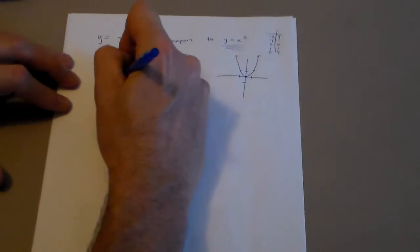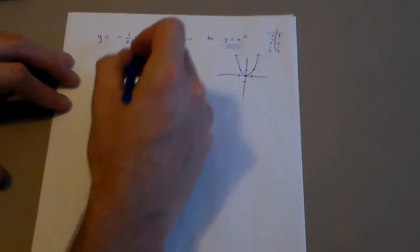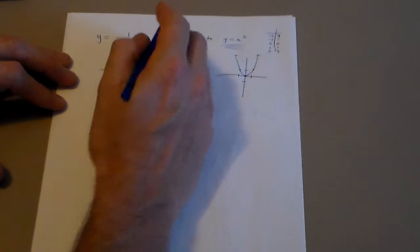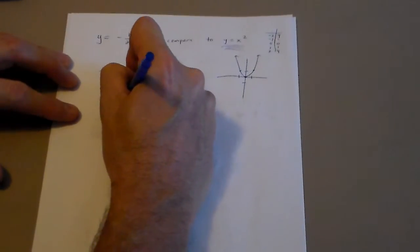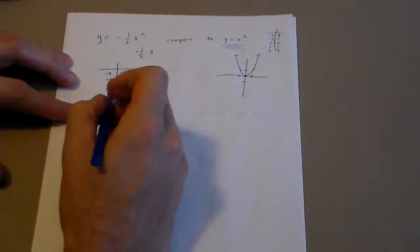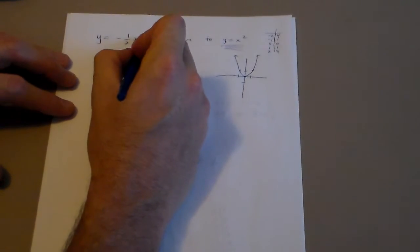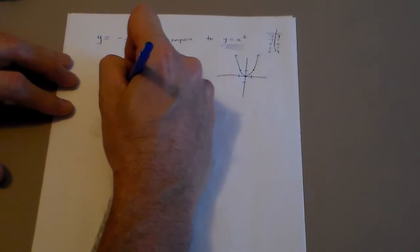Now I've got to do this one. Use the same points. Negative 2, negative 1, 0, 1, and 2. Let's plug a 2 in. 2 squared is 4. Negative 1 half times 4 is going to be negative 2. Let's plug a 1 in. 1 squared is 1 times negative 1 half. That's negative 1 half.